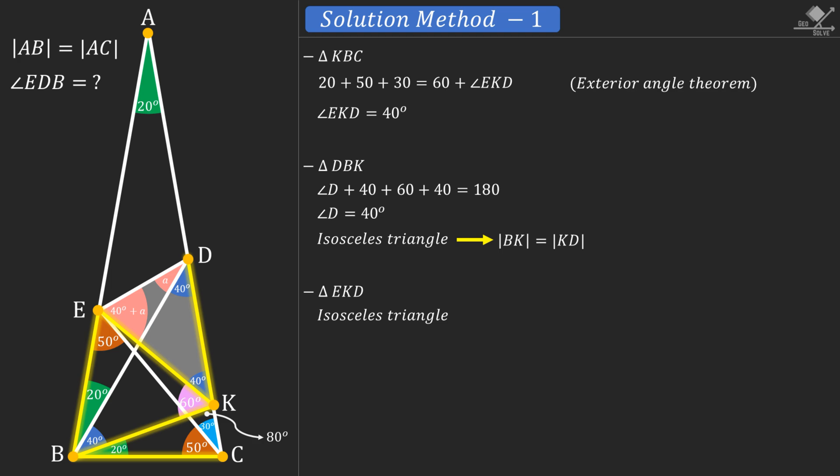So let's write the sum of internal angles of this triangle. From here 120 plus 2A will be equal to 180. And so our answer will be 30 degrees.